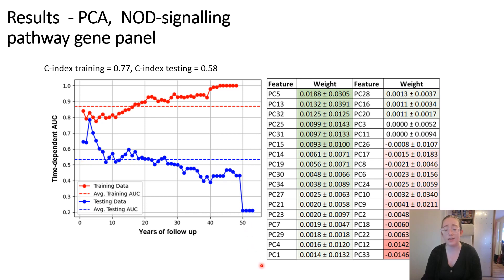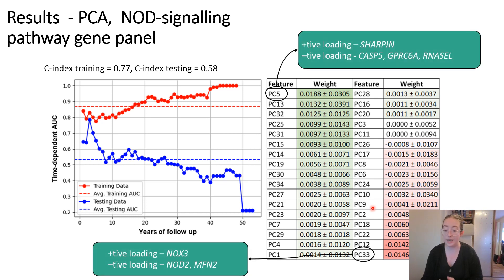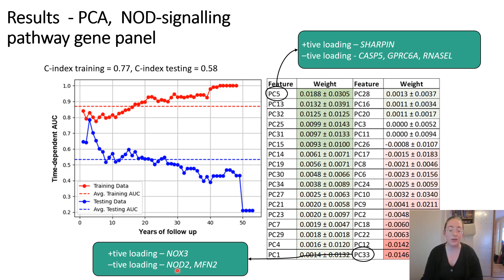We also looked at the feature weights, and in general the weight of each principal component is quite small. In terms of the largest positive weight and the largest negative weight, we can look at the genes that contribute to the positive and negative loadings in these principal components. It's important to highlight the negative loading of NOD2 in principal component 33, as NOD2 is already known as a strong genetic risk factor in the development of Crohn's disease, and so we also see it appearing here in the development of the stricturing endotype.